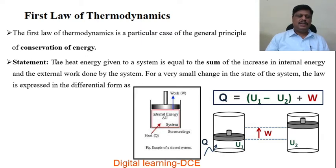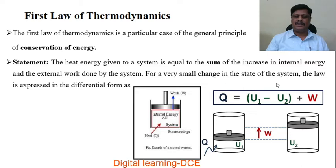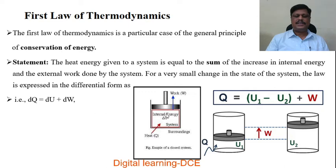Statement: It states that the heat energy given to a system is equal to the sum of the increase in internal energy and the external work done by the system. For a very small change in the state of the system, the law is expressed in differential form as dQ = dU + dW. That means if dQ amount of heat is supplied to the system, a part is used to increase its internal energy and the remaining part is used in doing work by the system.